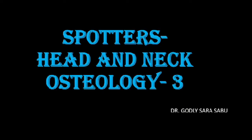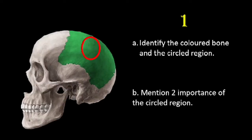Hello dear students, today we will see the third part of the spotters of head and neck osteology. I hope the last two sessions were useful for you. In this session also we will see five questions and the related questions. So the first question is: identify the colored bone and the circled region, and the second part of this question is mention two importances of the circled region.